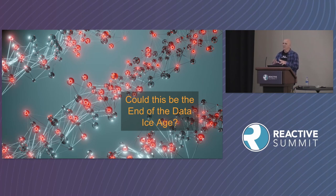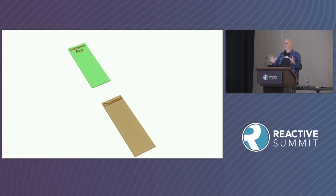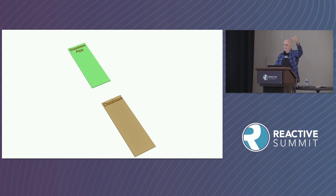By the end of this talk, you'll understand what I mean by data on ice. For backend applications, one of the most common patterns is the stateless pattern. It's a tried and true pattern — we've been using it well before we called it stateless. We've been doing this for decades. It's a well-oiled machine, extremely common, and it works very well.